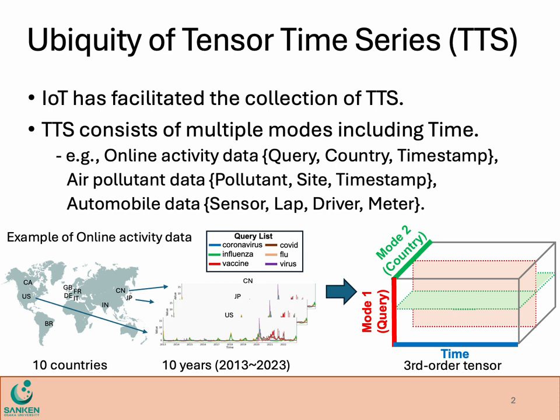Thanks to the development of IoT, tensor time series, which consists of multiple modes including time, can be generated in many applications. This is an example of online activity data, where the search amount of six queries related to COVID-19 taken from 10 countries for 10 years, forming a third-order tensor.